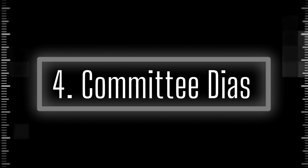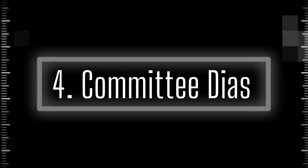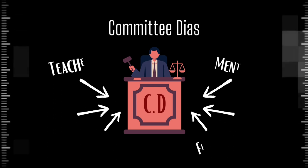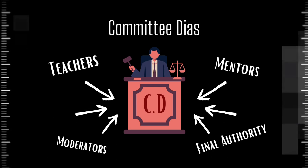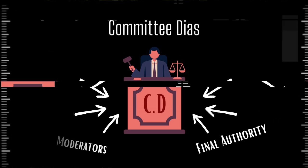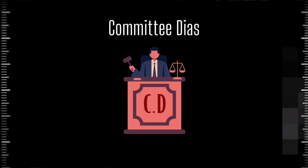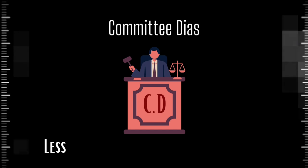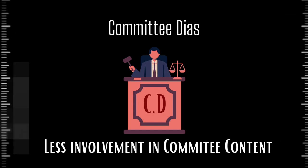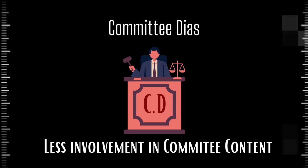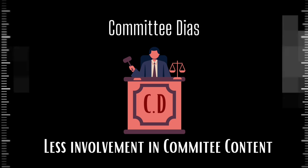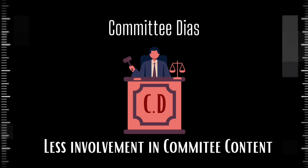Committee dais: Committee dais members act in the role of teachers, mentors, moderators, and final authorities of the committee. Although their role in committee matters and content is limited, their role as moderators in monitoring and directing committee procedure should be respected. Some Model UN conferences also allow a voting provision to impeach committee dais members, but this is expected in situations of high incompetence and often requires a unanimous or special majority vote to pass.